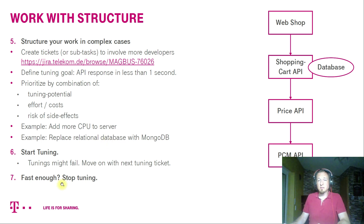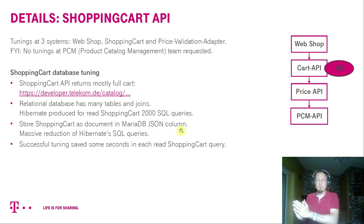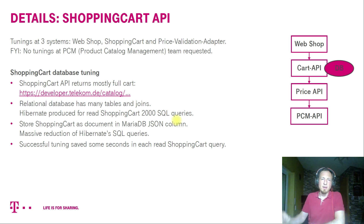At some point you will be fast enough, and then you should stop tuning to not risk more side effects. As I said, we did a shopping cart database tuning by using a DB JSON column as an intermediate solution, and of course it helped us a lot. If you are interested in the details about it, please leave me a comment and then I can explain things like this in a follow-up video.